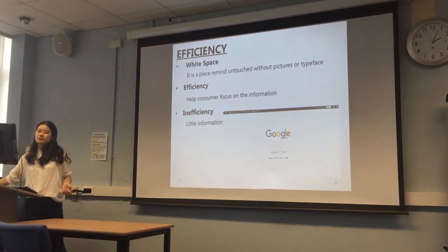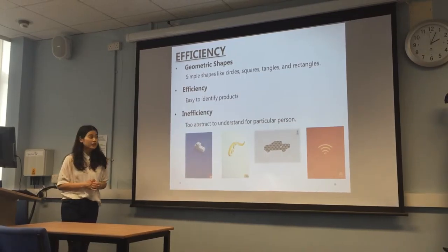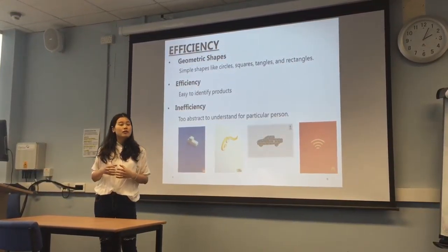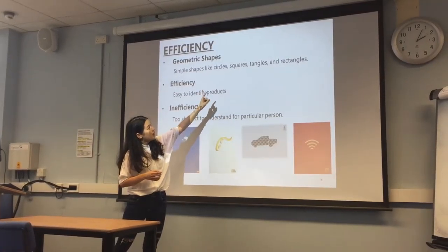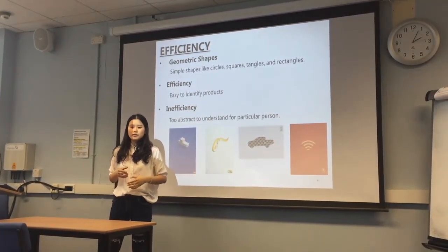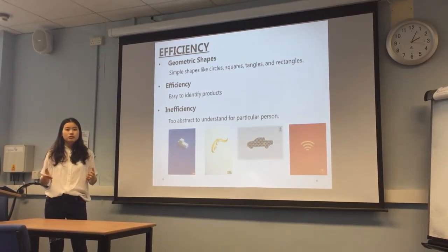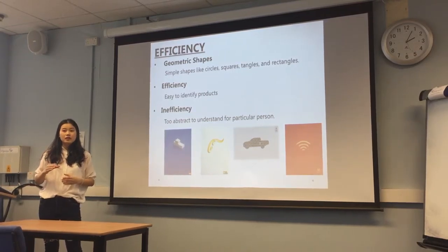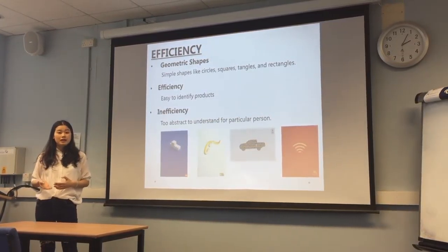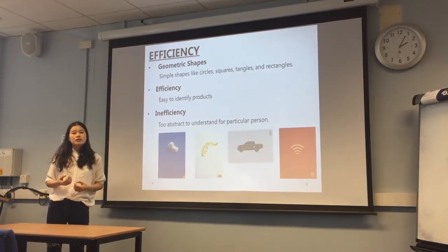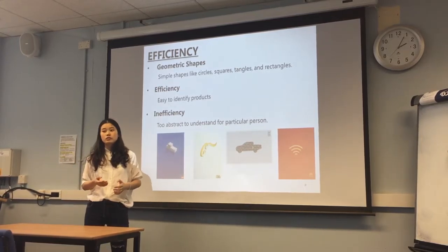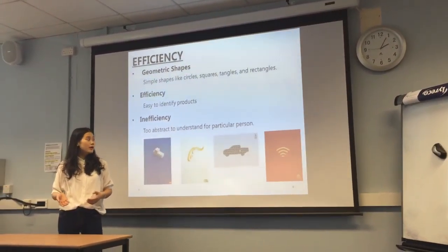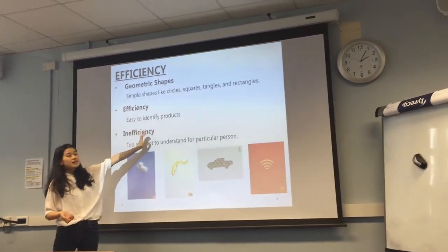Let's move to the last perspective — geometric shapes. Geometric shapes are very simple fundamental things, like the shapes we see in our life: circles, squares, and rectangles. We use those shapes to help people build a product image. For example, if we put a triangle above a square, it looks like a house. In this global background, people don't speak the same language or use the same words, but they can identify products through shapes. This is the efficiency — easy to identify products.